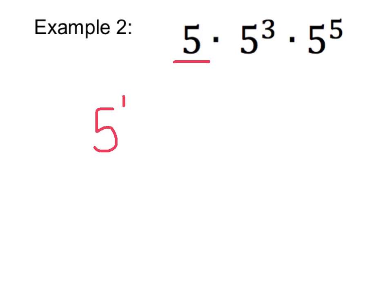Sometimes that exponent of 1 will be written in, but most times it won't be written in. We have to know that that's what it means. So our problem really states 5 to the 1st power times 5 to the 3rd power times 5 to the 5th power.